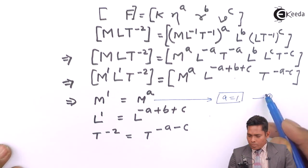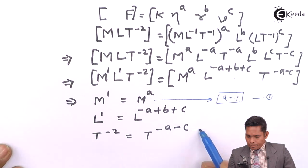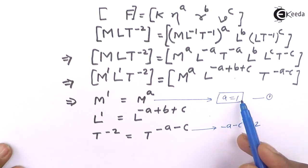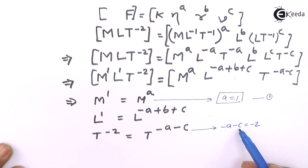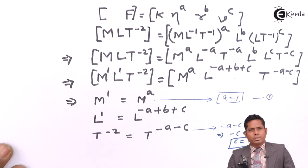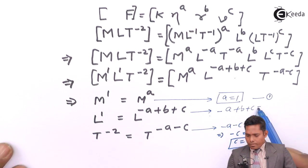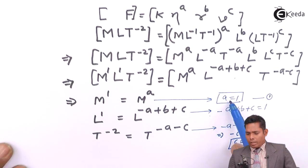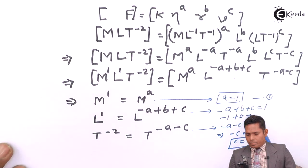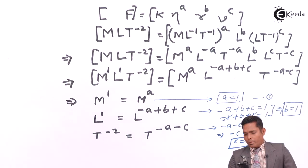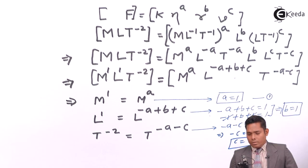From the power of L: minus a plus b plus c equals 1. Substituting a equals 1 and c equals 1, we get minus 1 plus b plus 1 equals 1, so the minus one and plus one cancel, giving b equals 1. Therefore, a equals 1, b equals 1, and c equals 1.